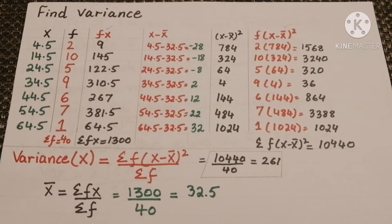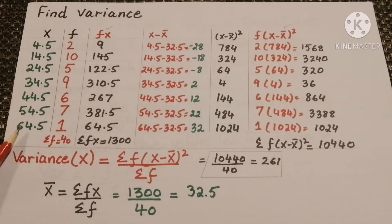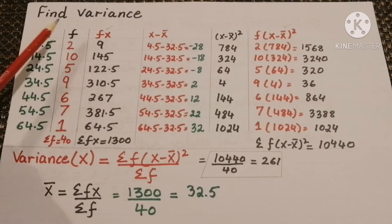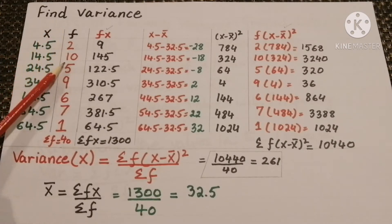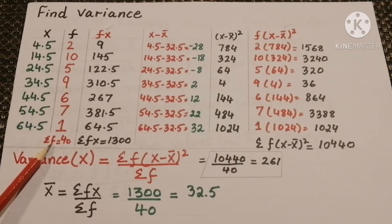Find the variance of the values of x given in the question: 4.5, 14.5, 24.5, 34.5, 44.5, 54.5, and 64.5, with corresponding frequencies 2, 10, 5, 9, 6, 7, and 1. The total number of f equals 40.